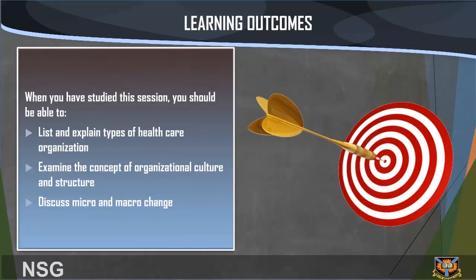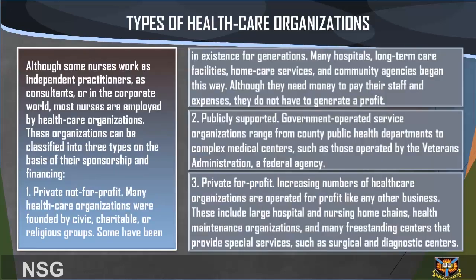Learning Outcomes: When you have studied this session, you should be able to list and explain types of healthcare organization, examine the concepts of organizational culture and structure, and discuss micro and macro change.